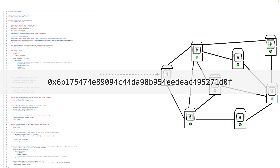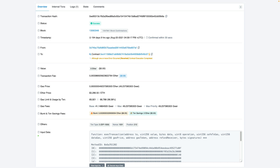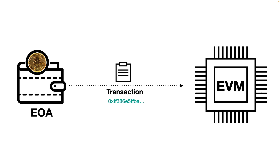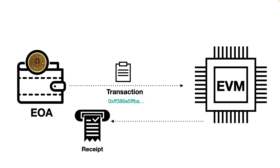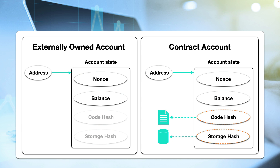A smart contract on Ethereum gets deployed at an address and doesn't exist in one single location — it exists everywhere, on every single node in the network. You communicate with a smart contract through its address by sending it a transaction. If you want to call a function on a smart contract, you send a transaction that talks to the EVM, which processes the function and produces a receipt telling you the result. There are really only two accounts on Ethereum: an externally owned account (a wallet) and a contract account.